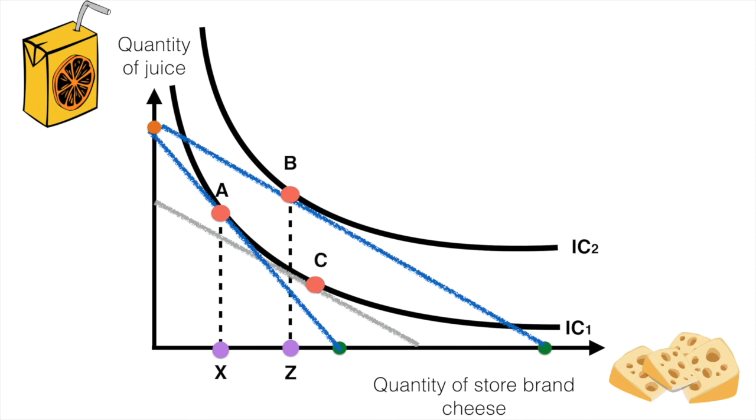The tangential point occurs at C, resulting in a quantity Y consumed of cheese before we consider the income effect. The substitution effect is then represented by the movement from X to Y units of cheese.